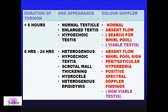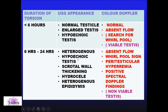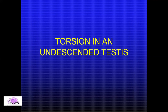Stressing the importance of comparing the contralateral asymptomatic side with the symptomatic side: a hypoechoic echotexture will alert you. Always look for the whirlpool to promptly diagnose this condition within the first six hours. After six hours, the job is easier — you will see a heterogeneous hypoechoic testis, scrotal wall thickening, reactive hydrocoele, and no flow on color Doppler, plus a whirlpool. Most of the time it will be a non-viable testis.